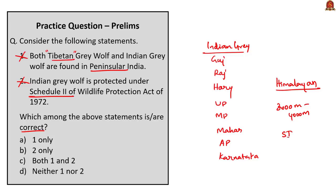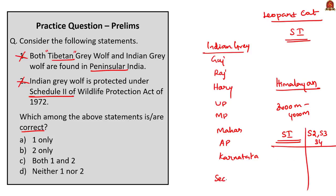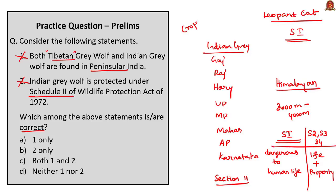The second statement: the Indian gray wolf is protected under Schedule II of the Wildlife Protection Act 1972. This is incorrect — it is protected under Schedule I of WPA 1972. The Tibetan gray wolf and leopard cat are also listed under Schedule I. The key difference: Schedule I animals can be hunted only if they become dangerous to human life or are disabled/diseased beyond recovery (permission from Chief Wildlife Warden required), whereas Schedule II, III, and IV animals can also be hunted if dangerous to property, including standing crops. Both statements are incorrect — answer is option D: neither one nor two.